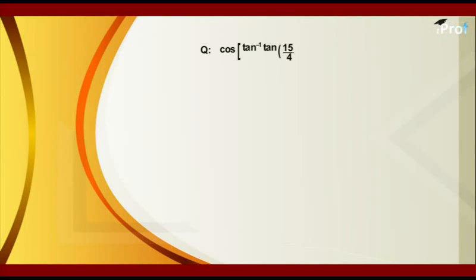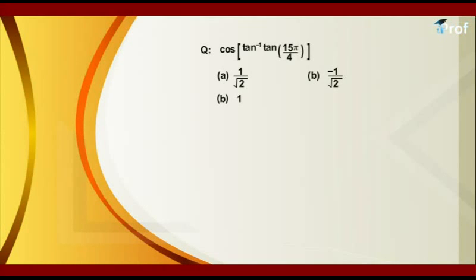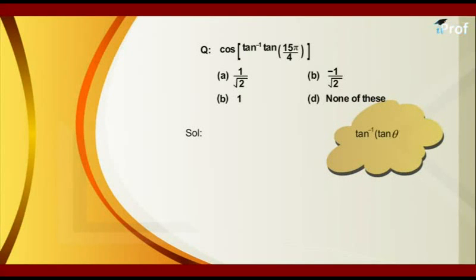The next question is to find the value of cos(tan inverse(tan(15π/4))). The choices are 1 upon root 2, minus 1 upon root 2, 1, and none of these. To solve this, we know that tan inverse(tan θ) equals θ only if θ lies between minus π/2 and π/2.